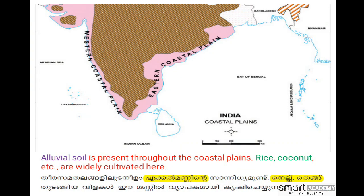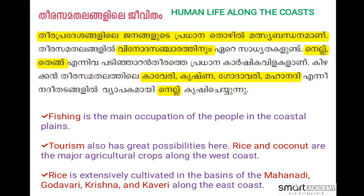Backwaters and estuaries are seen in the backwater area, and delta formation also takes place. Alluvial soil is present throughout the coastal plain. Rice and coconut are widely cultivated here. Tourism also has great possibilities here. Rice and coconut are the major agriculture crops along the west coast. Rice is extensively cultivated in the basins of the Mahanadi, Godavari, Krishna and Kaveri along the east coast.